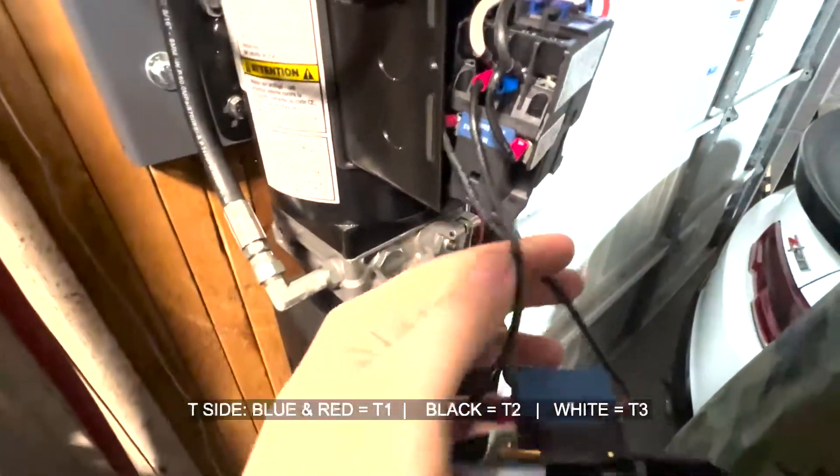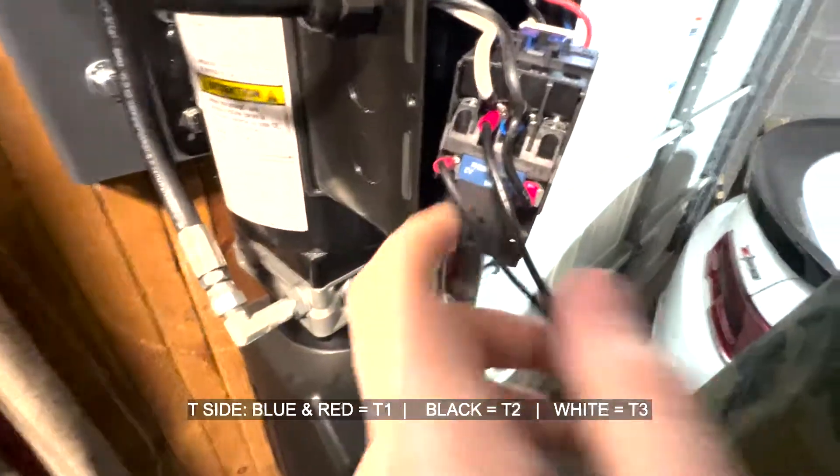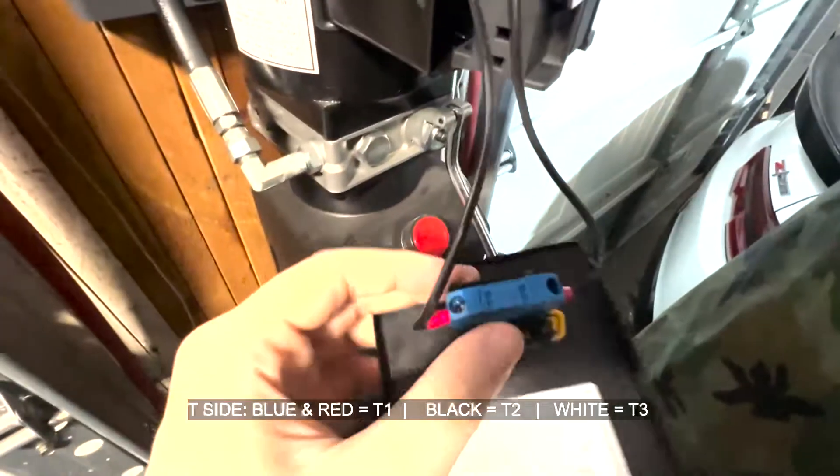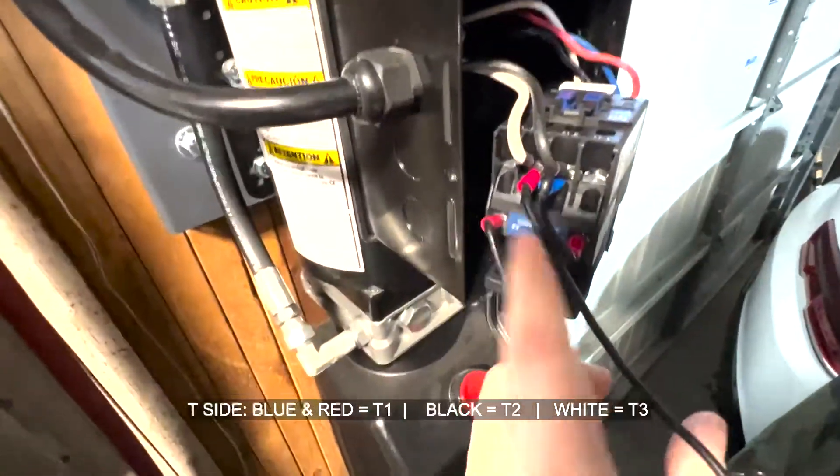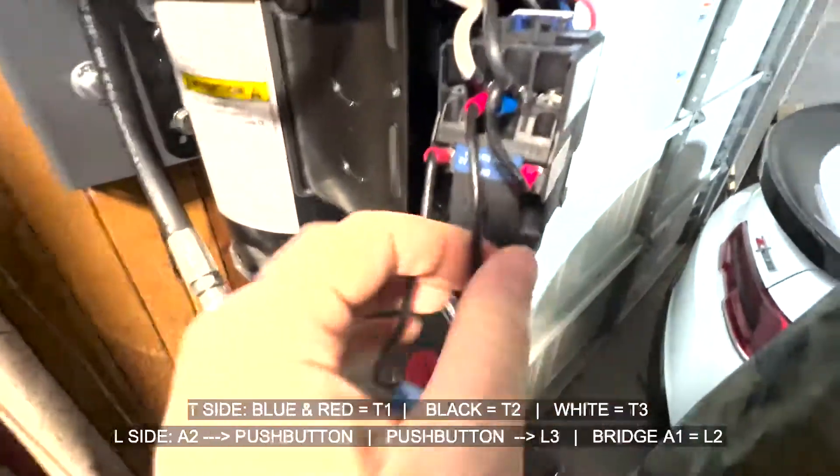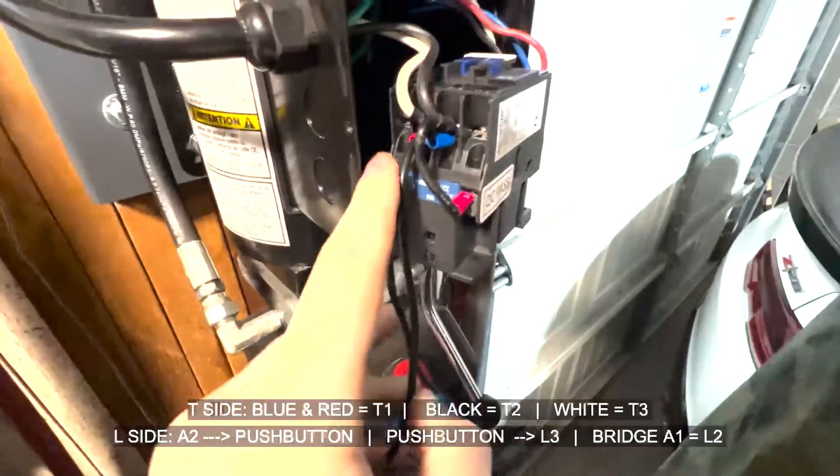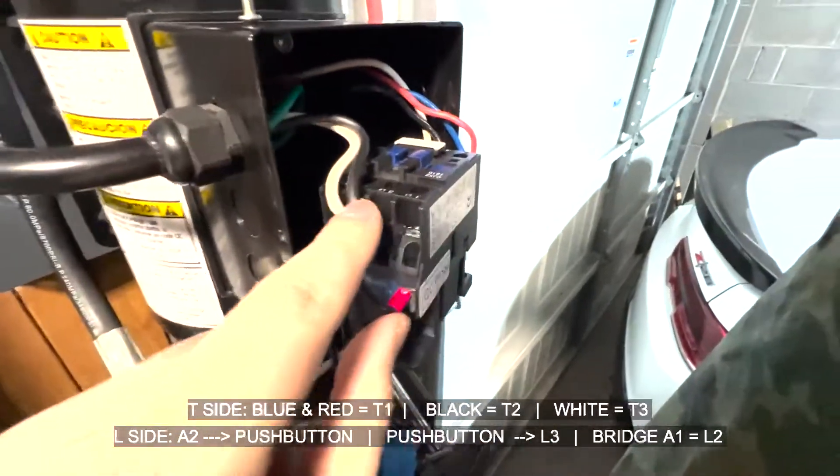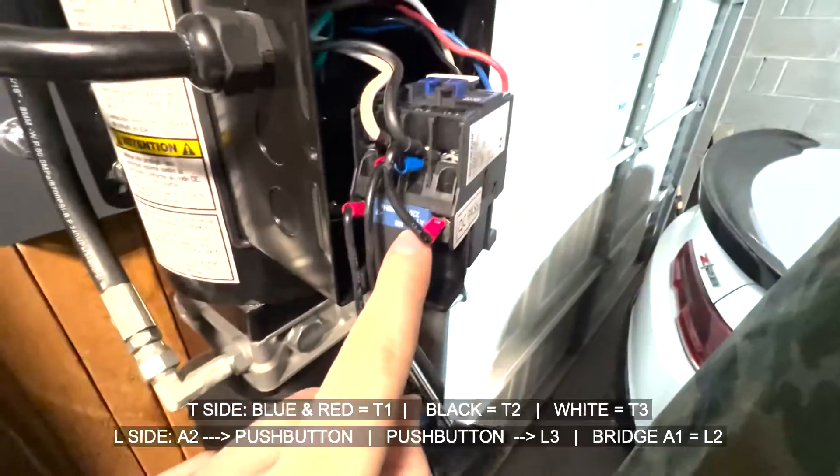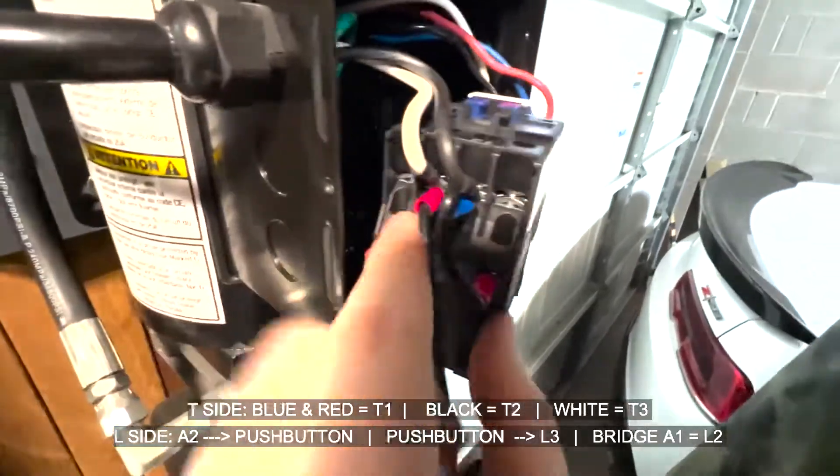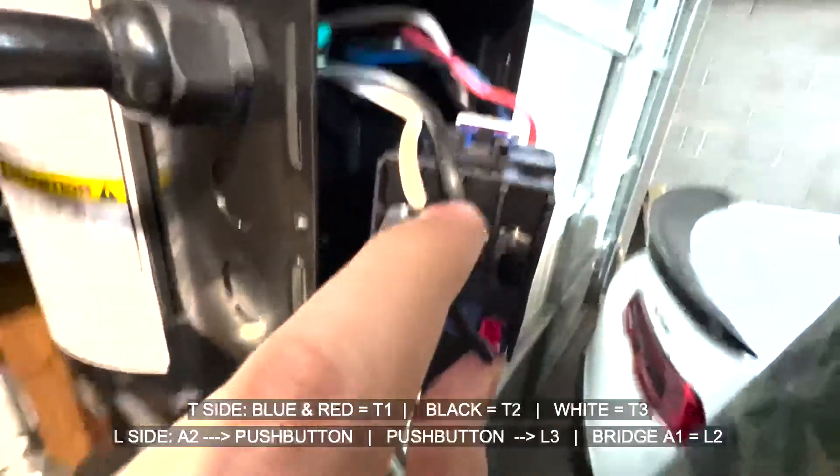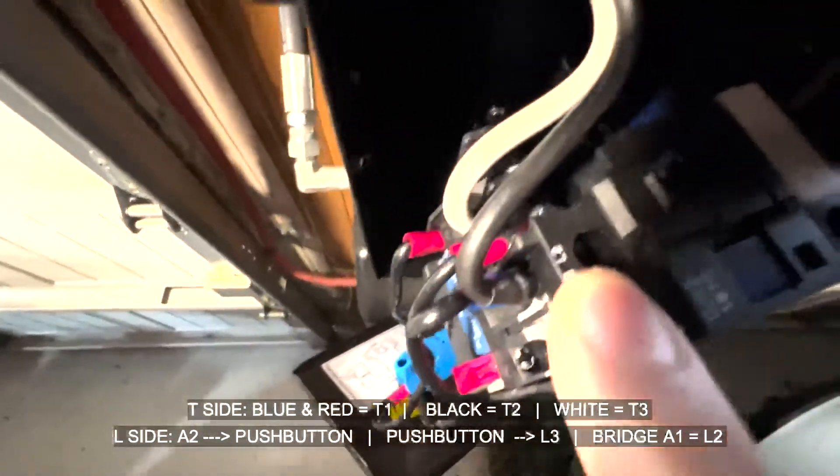And then over here, I'm not 100% sure if either of these are changed, but you can see that the push button kind of runs one side down to this little A2, and then one to a hot, so it's making the connection. And then the other hot down to A1. So you're pretty much taking the bridge from here, you're taking the bridge from L2.